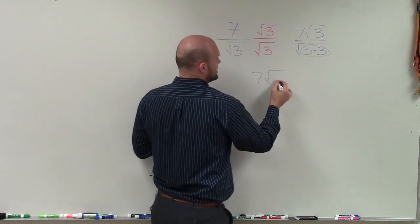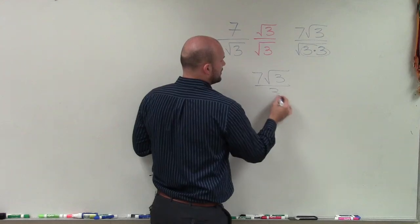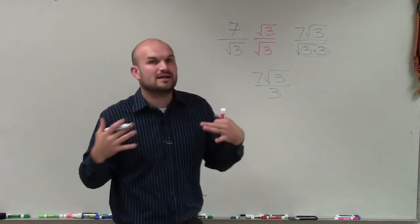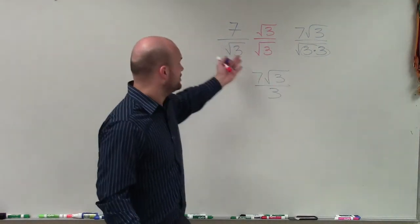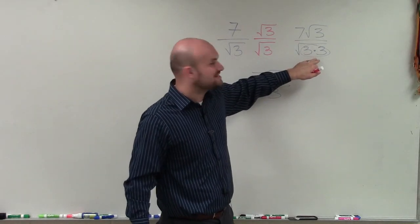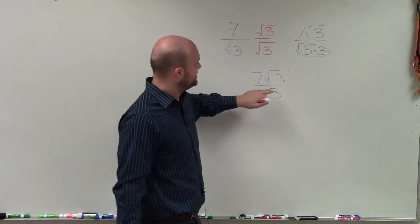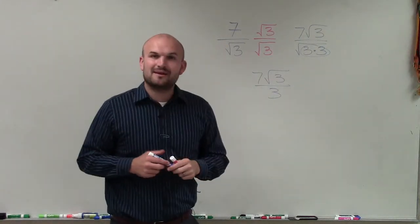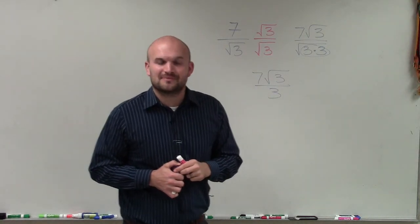So my final answer is 7 times the square root of 3 all over 3. Because remember, the square root says what number multiplied by itself gives us that value. Here, what number multiplied by itself gives us 3 times 3, which would be 9? So the answer would be 3. There you go, ladies and gentlemen. That is how you rationalize the denominator. Thanks.